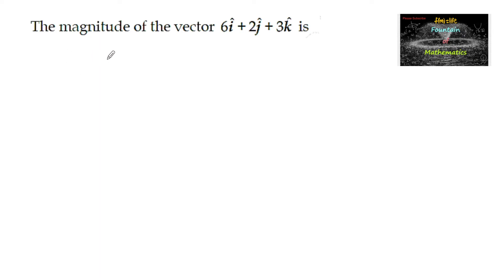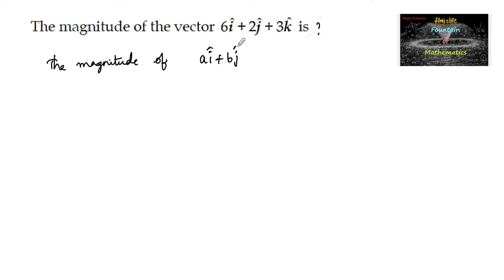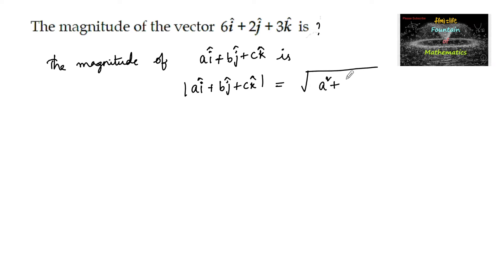The magnitude of the vector 6i + 2j + 3k: since we know that the magnitude of vector ai + bj + ck, written as |ai + bj + ck|, is equal to the root of a² + b² + c².